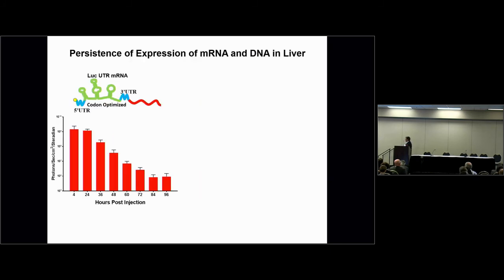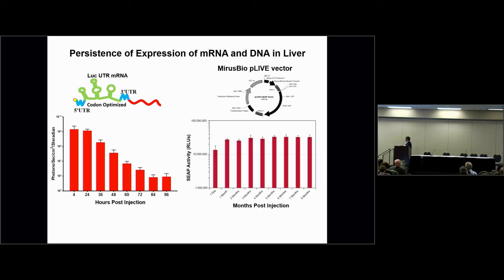Regarding persistence: an optimized mRNA nanoparticle has persistence only out to about 3–4 days, then falls off. Some examples in the literature reach 7–9 days. By contrast, the Mirus Bio pLIVE vector using an albumin promoter has expression on the order of 8 months. So it's night and day. There doesn't seem to be a straightforward way to improve mRNA persistence, making it a multi-dosing system by definition — which increases the chances of innate immune response.